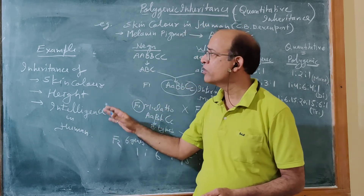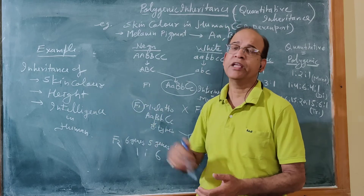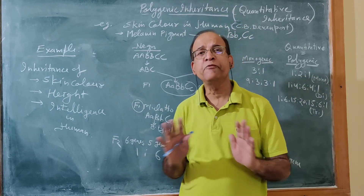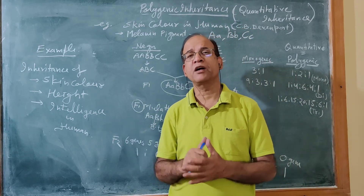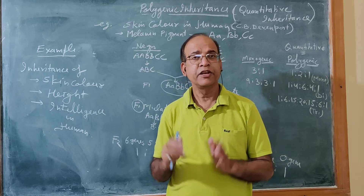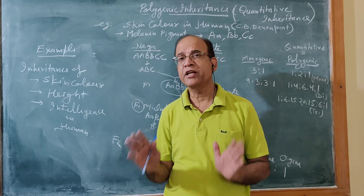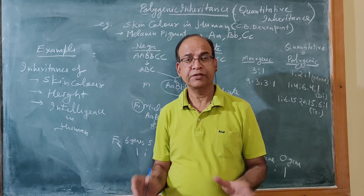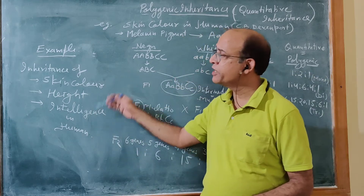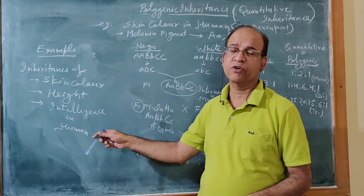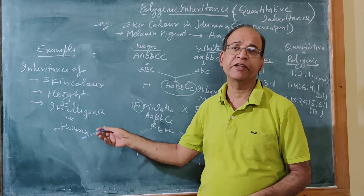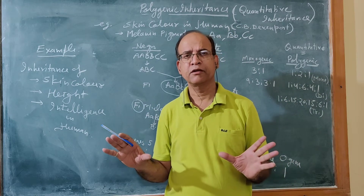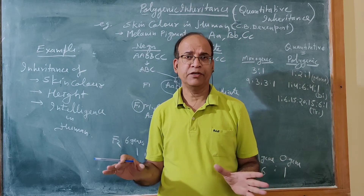In polygenic inheritance, the extreme phenotypes are very rare, and the number of intermediates is much more. Secondly, these polygenic or quantitative characters are very much affected by the environment.